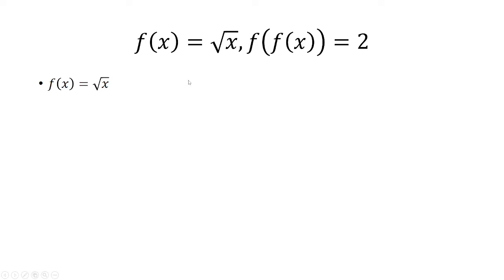In order to find f of f of x, we have to put the square root of x in place of x. Think of this as the square root being the outside function, and then putting square root of x inside the square root. So we have the square root of the square root of x.